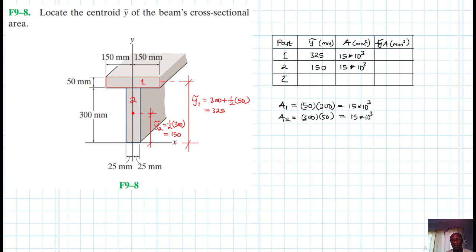So we are multiplying this by this. So 325 by 15, so this gives us 4875 times 10 to the third. Then 150 by 15, so this gives us 2250 times 10 to the third. And we have total area here. This is just 30 times 10 to the third. Then we add the other one, 4875. So this